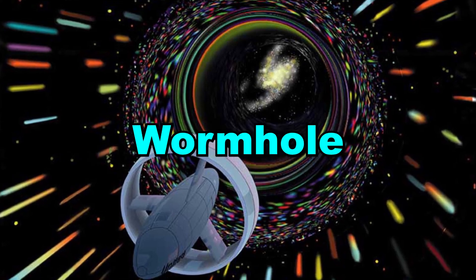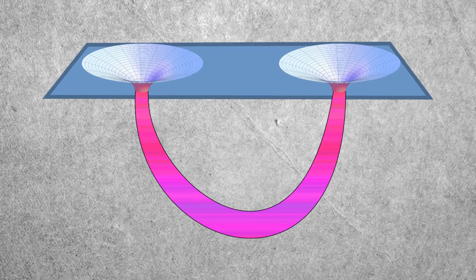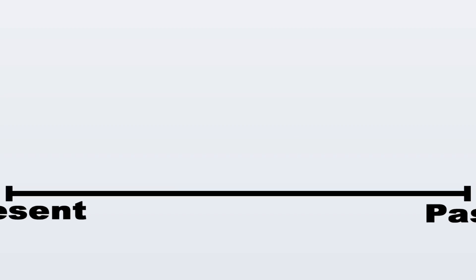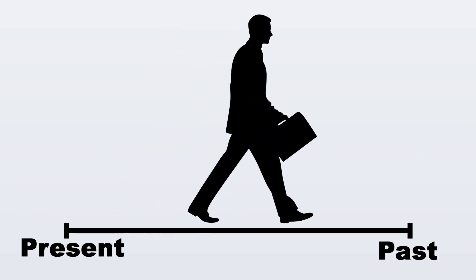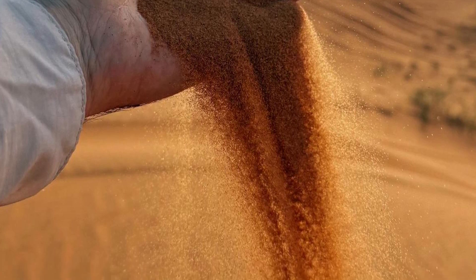First, we have wormholes, hypothetical shortcuts through space-time. If you could stabilize one with negative energy, which is exotic matter that repels gravity, you might connect two times and go through them. But negative energy exists only in quantum scale amounts. We've never observed it macroscopically.